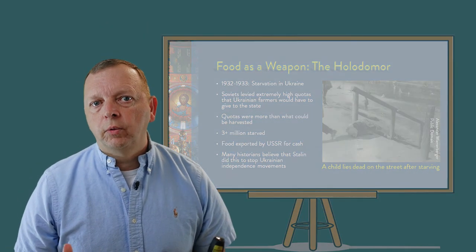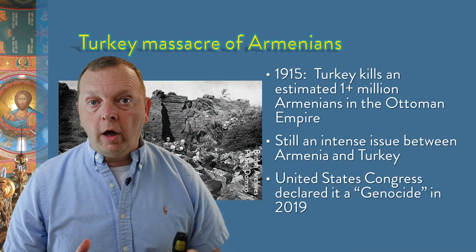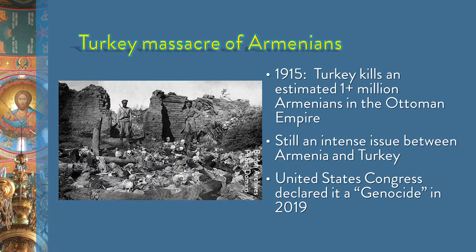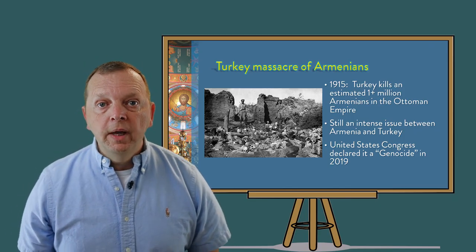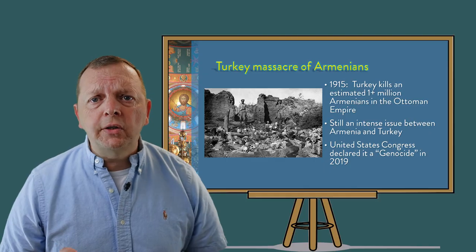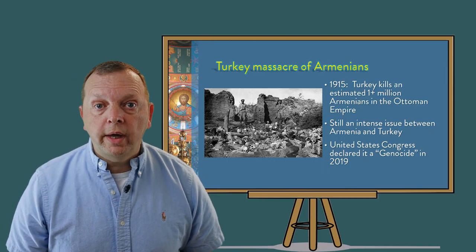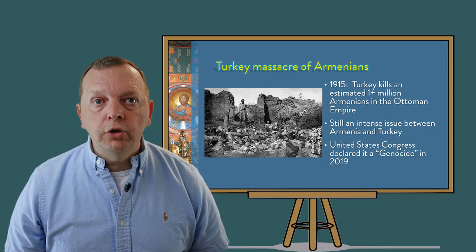Not all the genocides in the region were committed by the Russians or the Soviets, however. After the 1915 World War I Battle of Sarikamish between the Russian and Ottoman empires, the Ottomans believed that the Armenians living in what is today Turkey had conspired with Russia to win the battle. In retribution, the Ottomans killed nearly 1 million Armenians. Today, Turkey argues that this was not a crime, but a necessary operation of war. However, over 100 years later, in 2019, the United States Congress and Senate voted to recognize this act as a genocide.